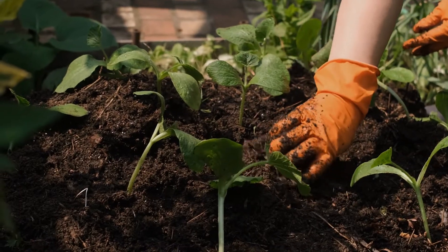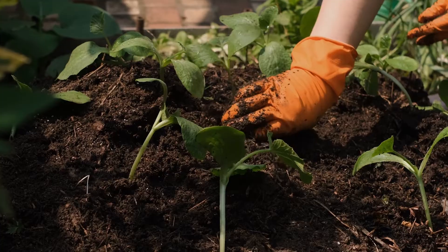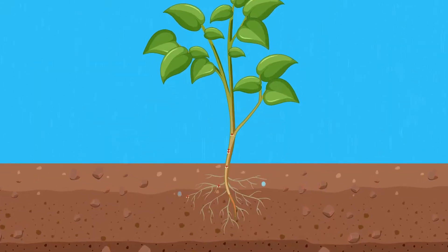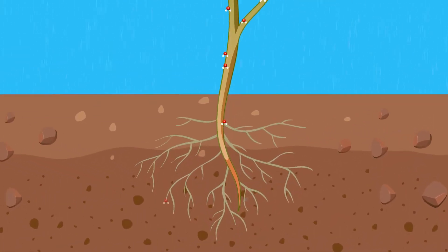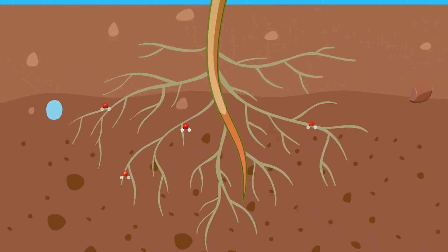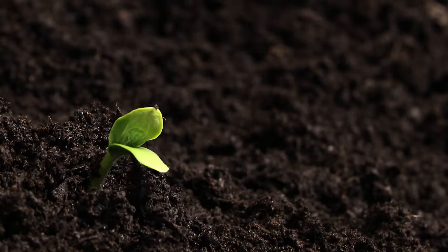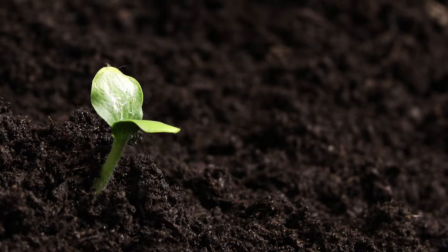Soil is incredibly important to organisms. Most plants use soil and its components as their primary source of water, minerals, and nutrients, which they need to photosynthesize.